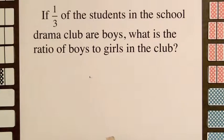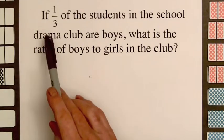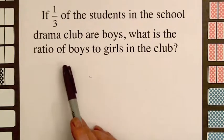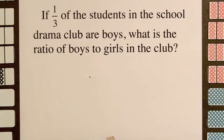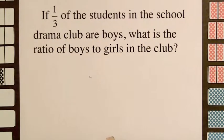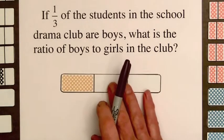Let's see how the information we have just seen can be used to solve a word problem. If 1 third of the students in the school drama club are boys, what is the ratio of boys to girls in the club? This fraction 1 third tells us about part of the set, so we'll use a 1 third bar.